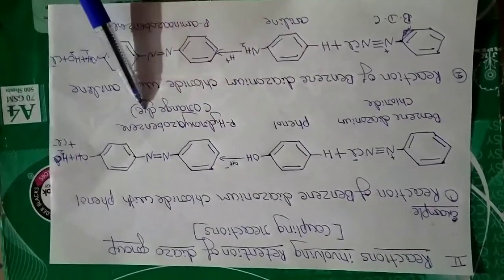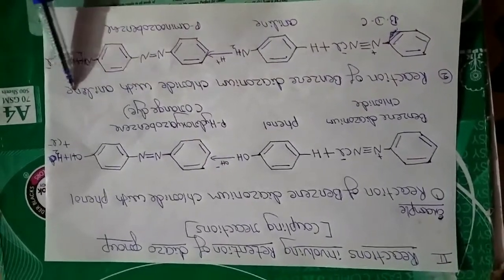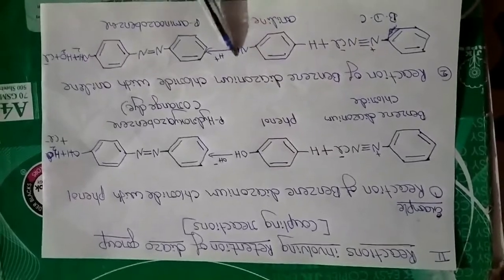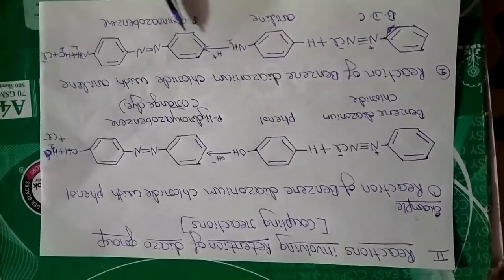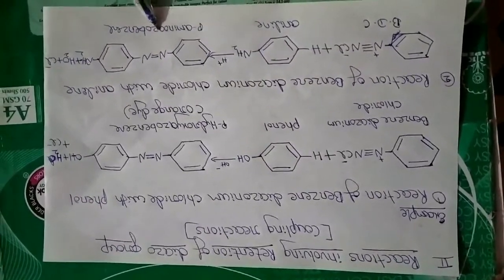Second example: reaction of benzene diazonium chloride with aniline. Benzene diazonium chloride reacts with aniline in acidic medium to form para-amino azobenzene - at the para position, the amino group is present.